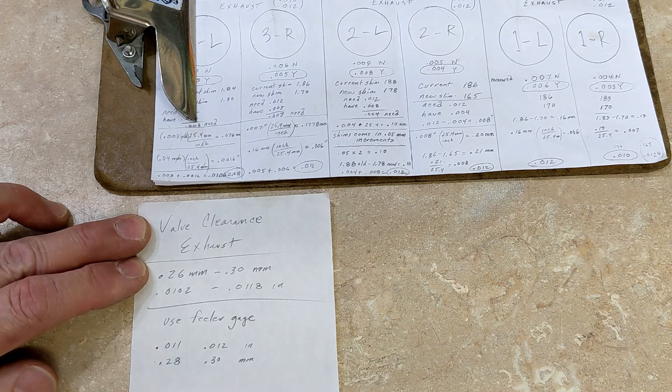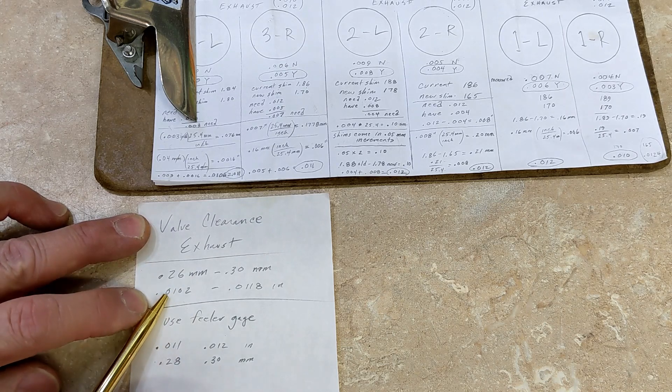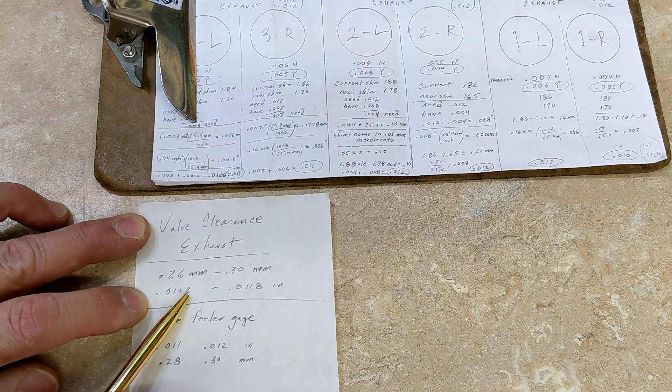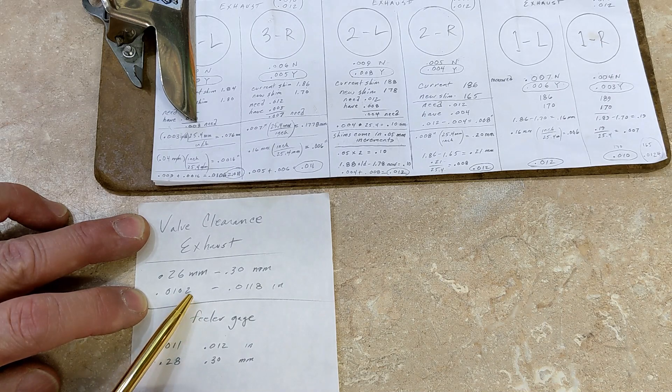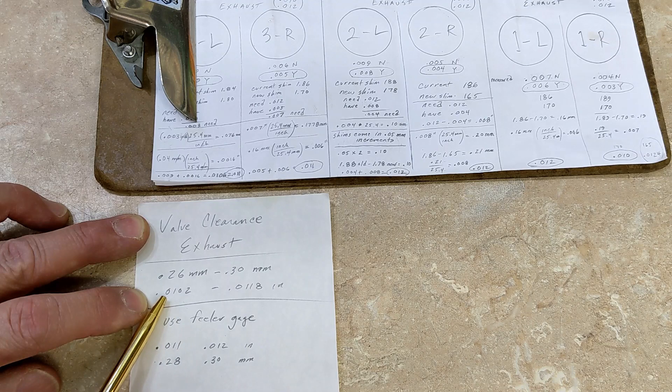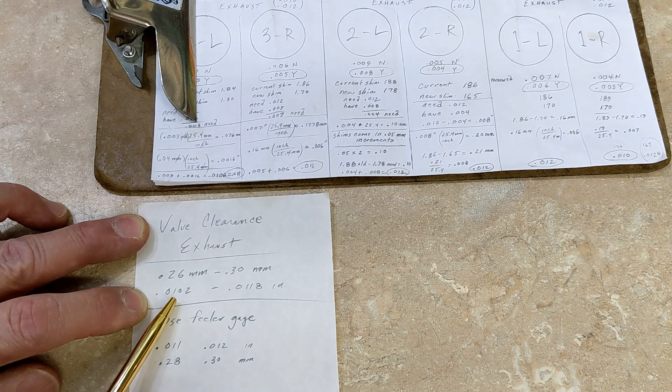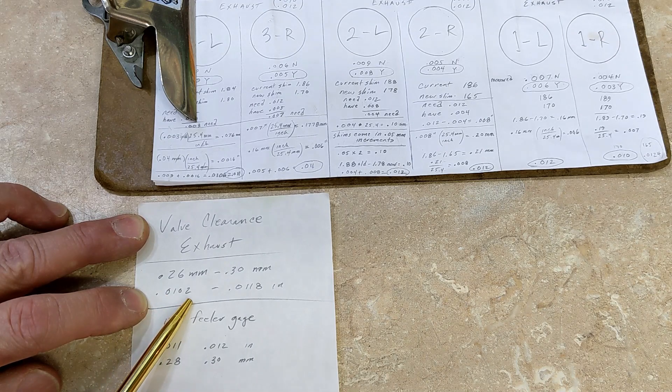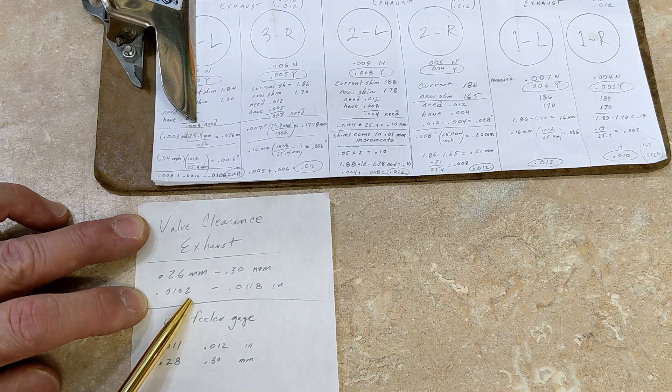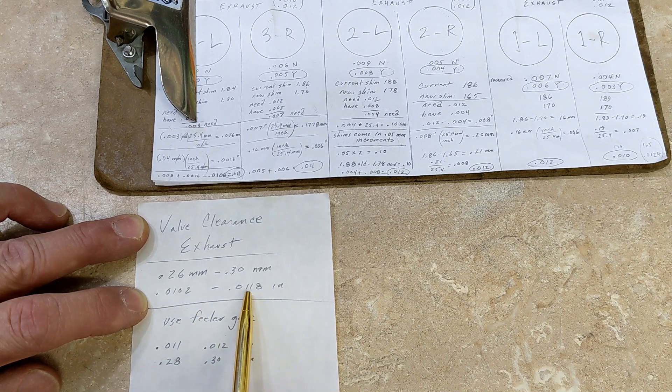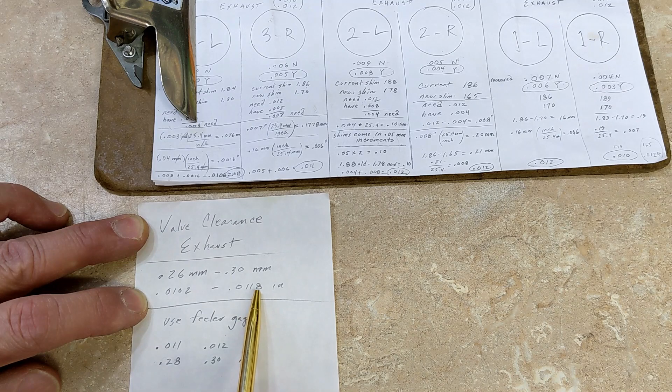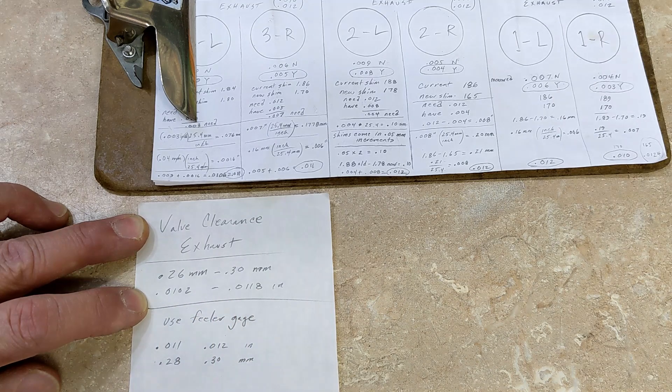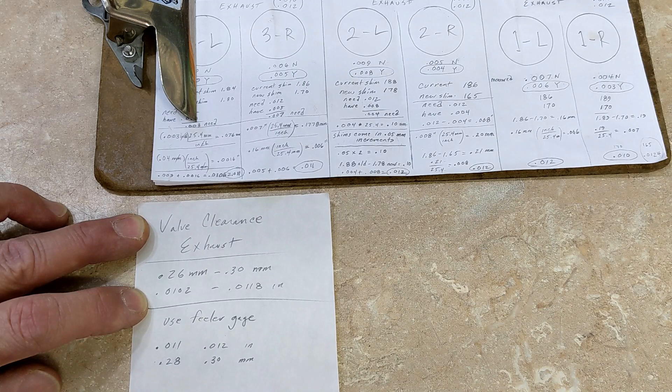If you look at the exact tolerance on the exhaust valves, it's 0.0102. I was just rounding that off to 10 because I didn't want to remember this little digit forever. If I'm at 0.0106, I'm within tolerance and all these other ones were 11 plus a little bit. So I should be very close to what we need. I'm definitely not going to take it apart for 4 ten-thousandths of an inch.